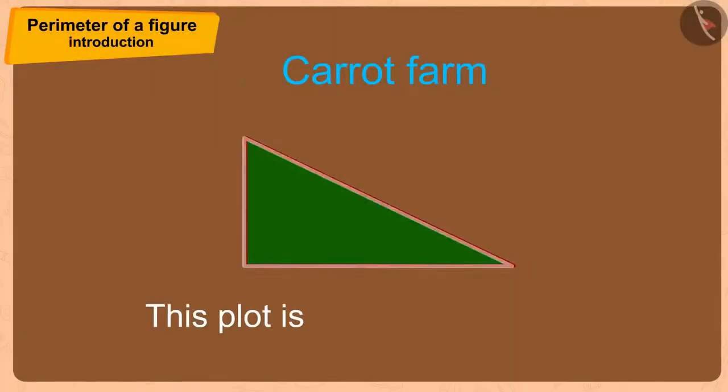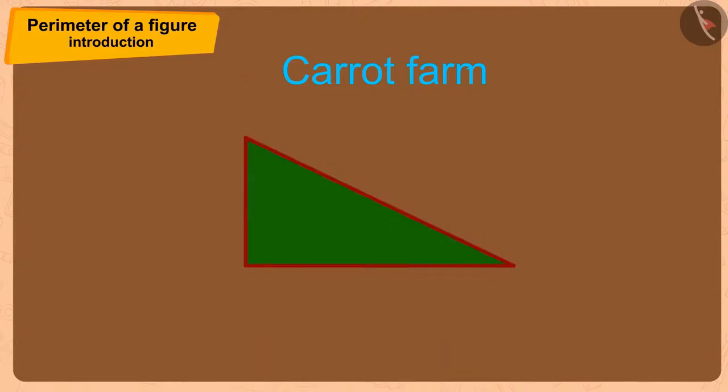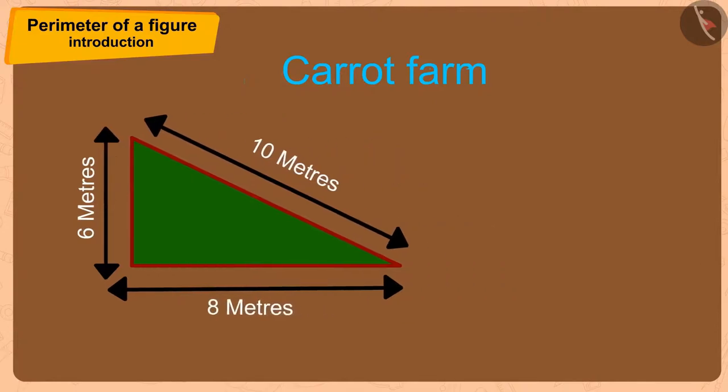This plot is triangular-shaped. Therefore, to find the perimeter of its fence, we only have to add the length of its edges. In this way, to fence this plot, Bhola needs to add the sides 6, 10, and 8.